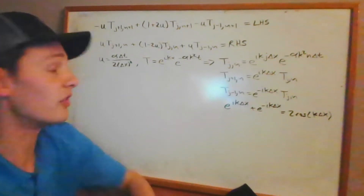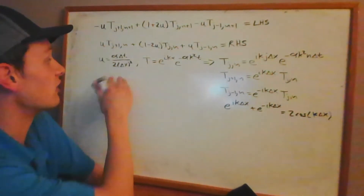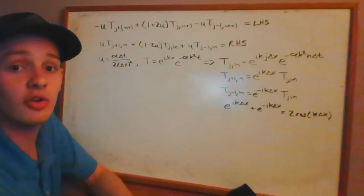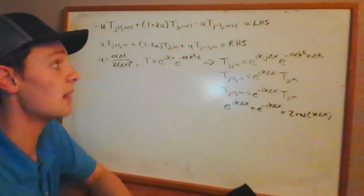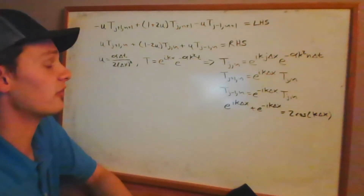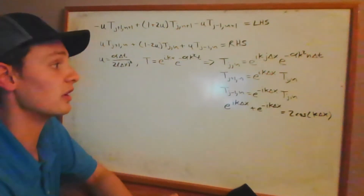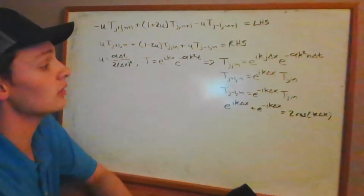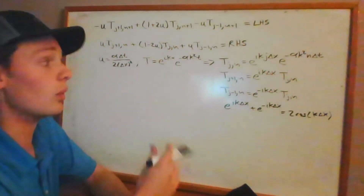What we saw in the previous video is that for any value of u, the solution we obtained was stable, where u is a combination of three different constants: the thermal diffusivity, the time increment, and the position increment, which are used to approximate the partial derivatives that appeared in the heat diffusion equation. We also used the solution to that partial differential equation to obtain equations which we used in part three of this video series, where we performed a von Neumann stability analysis on the explicit differencing method. So if you need a refresher on how we got these equations, you may want to watch that video before watching this one.